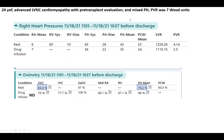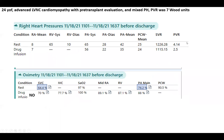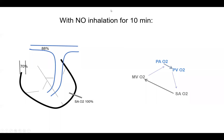This is important because the shunt could be contributing to her PVR since she has mixed pre- and post-capillary pulmonary hypertension. Her PVR at baseline was still elevated over three. We did NO inhalation to assess whether the pulmonary hypertension was reversible before transplant. With nitric oxide treatment for 10 minutes, the QPQS became 100 minus 70 divided by 100 minus 88. Notice that with NO you get much more O2 step up — at baseline the step up was 12%, but with nitric oxide it rose to 18%, and the QPQS dramatically rose from 1.5 to 2.5.